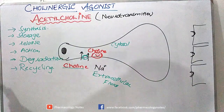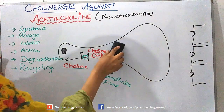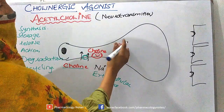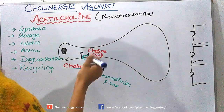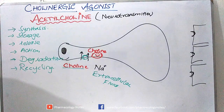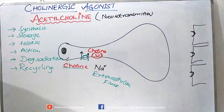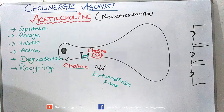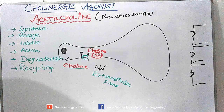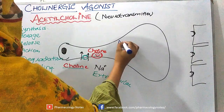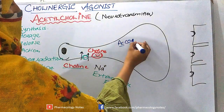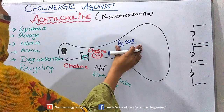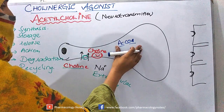Once choline is in the cytosol, this choline will bind with an acetyl group that is present in acetyl CoA. This acetyl CoA comes from mitochondria after fatty acid oxidation and pyruvate oxidation.